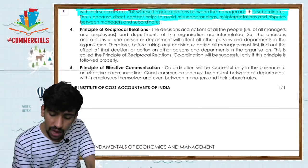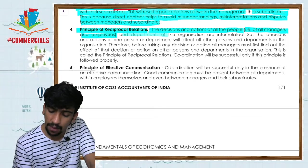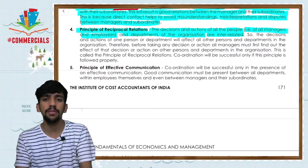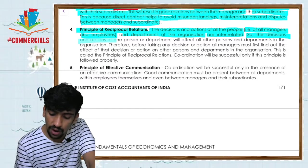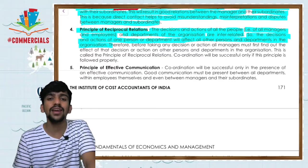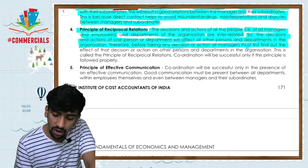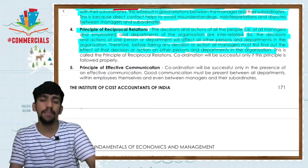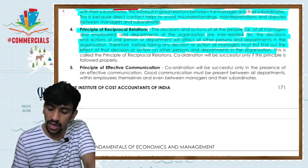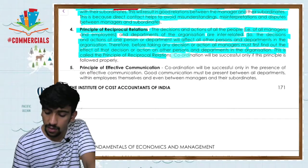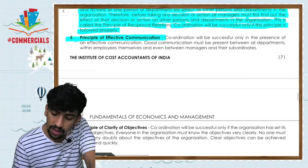The principle of reciprocal relationship — the decisions and actions of all managers, employees, and departments of an organization are interrelated. Everyone is dependent on each other. The decision of one person or department affects others. Therefore, before taking any decision, a manager must first find out the effect of that decision on other persons and departments. Coordination will be successful only if this principle is properly followed.